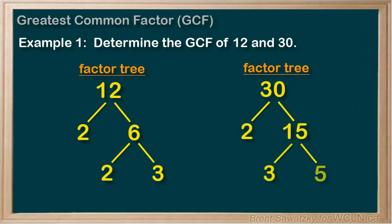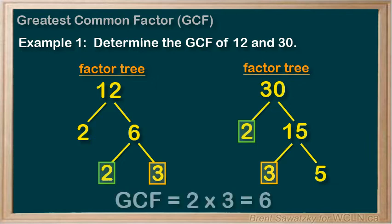So our common factors between 12 and 30 are both 2 and 3. If they are both factorable by 2 and 3, then they must both be factorable by 2 and 3. So 6 would be our greatest common factor, and our results agree with the other method. If we take all of our common prime numbers and multiply them, we end up with the greatest common factor, or GCF.